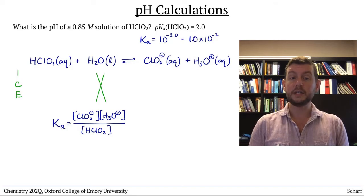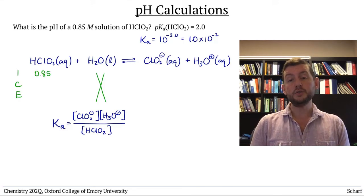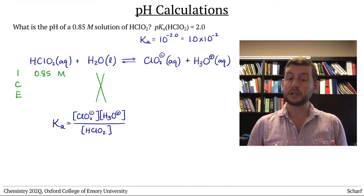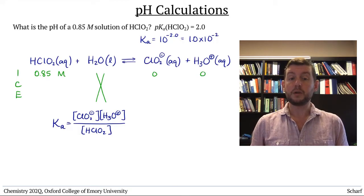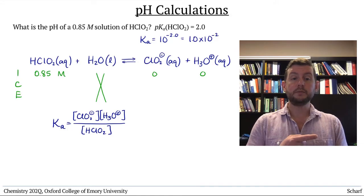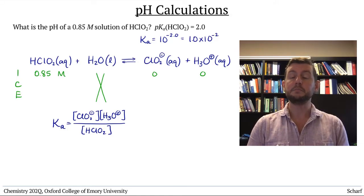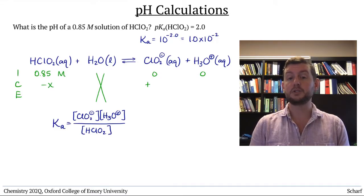We know the initial concentration of HClO2, that's the given value of 0.85 molar. We assume that the concentration of products are at 0 initially. As the reaction proceeds toward equilibrium, some HClO2 reacts, minus x, to form ClO2- and H3O+, both plus x.